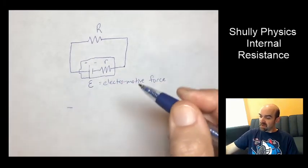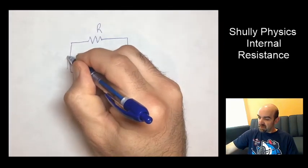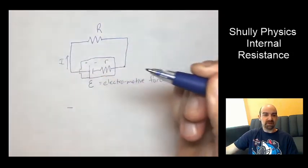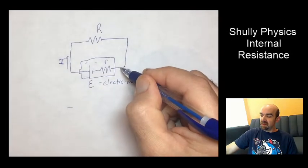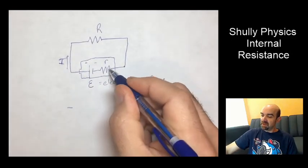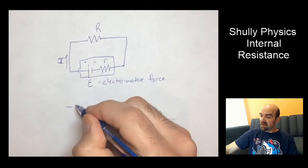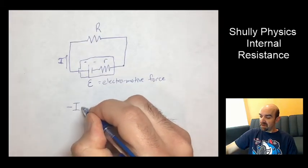So if we just run that around, there's going to be first, with a flow of current going this way, that's the direction I'm taking my loop in, is the direction of this current, there's going to be a negative change in potential from the resistor with the amount I R.